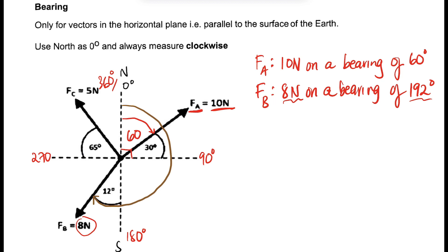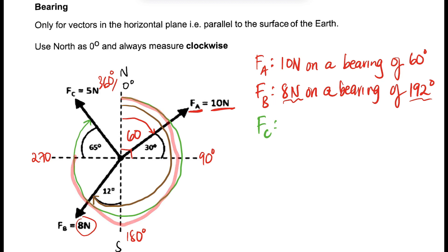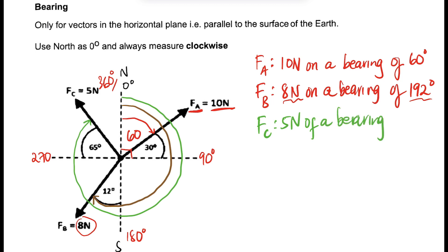Now let's look at Force C. We start from the positive y-axis and move clockwise until we hit the force. That gives us 270 plus 65 degrees, which equals 335 degrees. So the 5 newton force is on a bearing of 335 degrees. That's how you do bearings — always start from the positive y-axis and move clockwise.